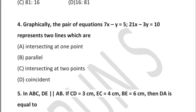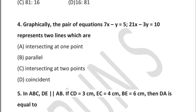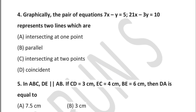Question 4: graphically, the pair of equations 7x − y = 5 and 21x − 3y = 10 represents two lines which are — intersecting at one point, parallel, intersecting at two points, or coincident.